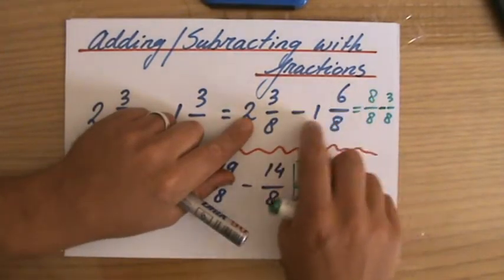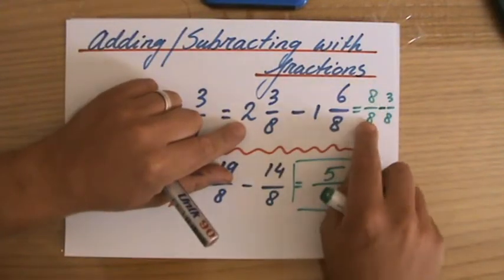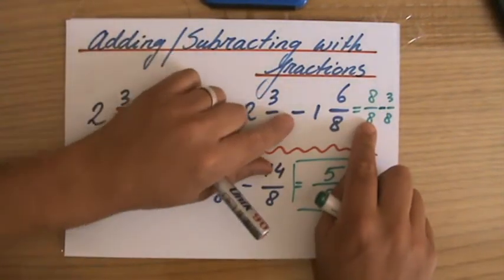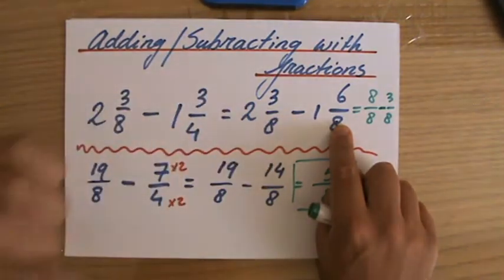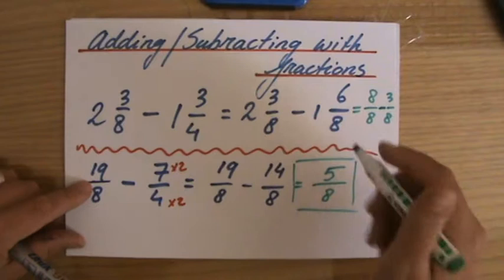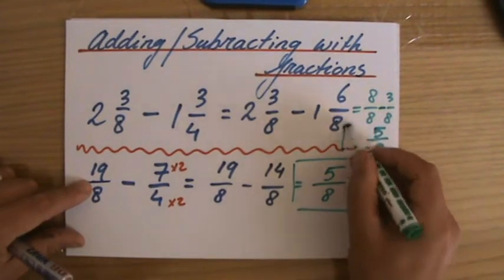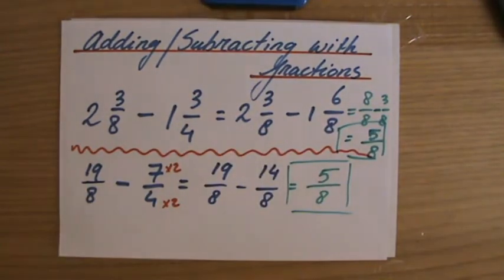I'm just squeezing it in, can you see that? So 2 minus 1 is 1, so I manipulate that 1 into 8/8, and 3/8 minus 6/8 is minus 3/8. So 8/8 minus 3/8 is 5/8.